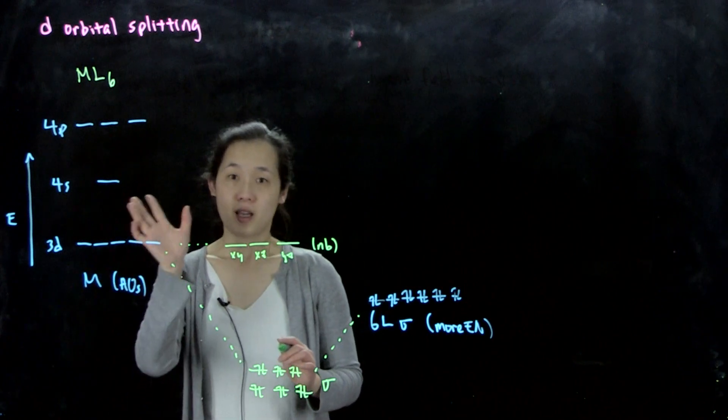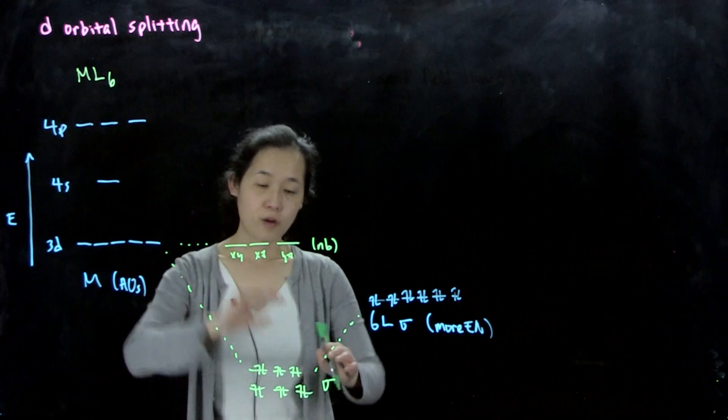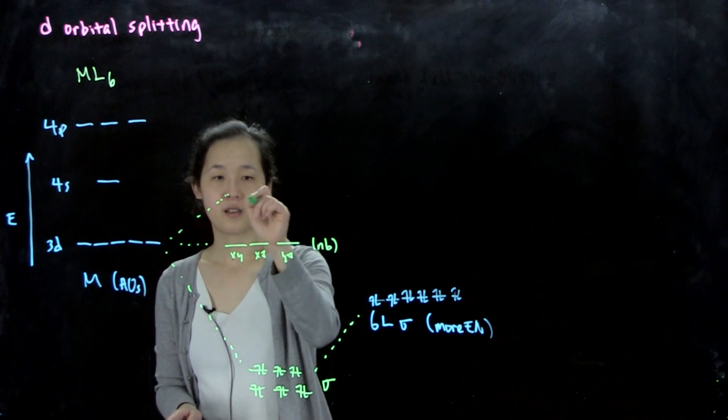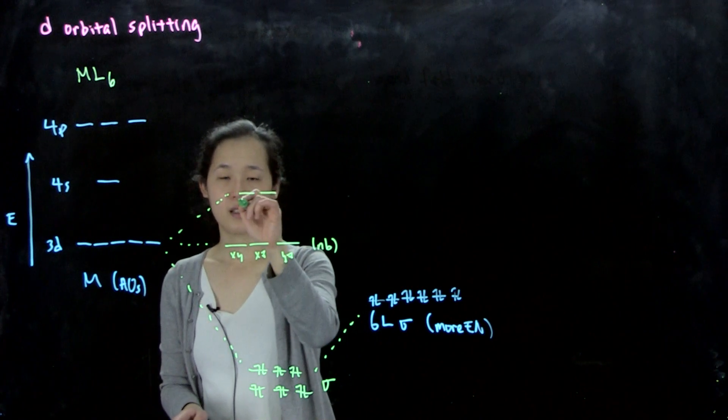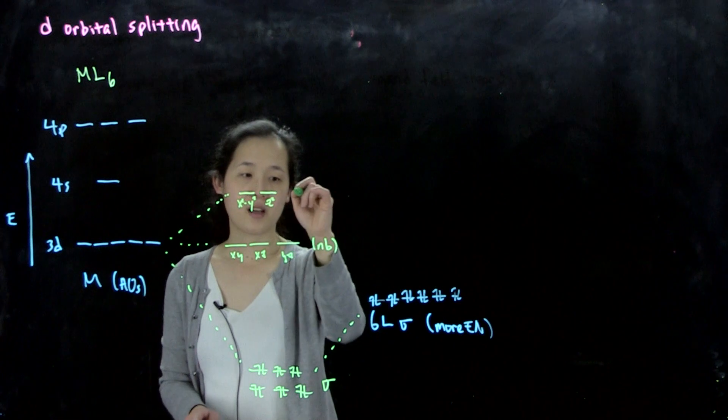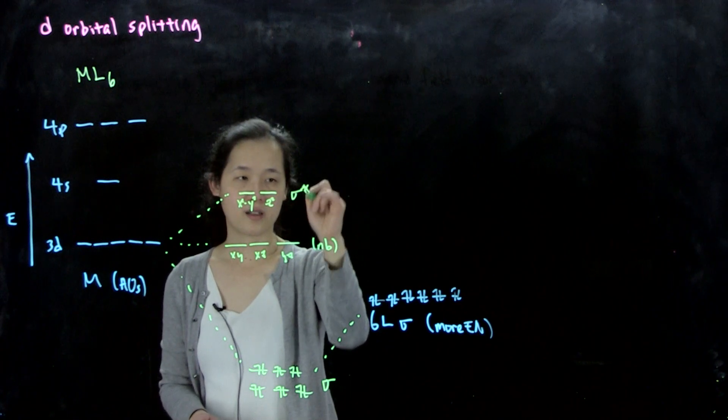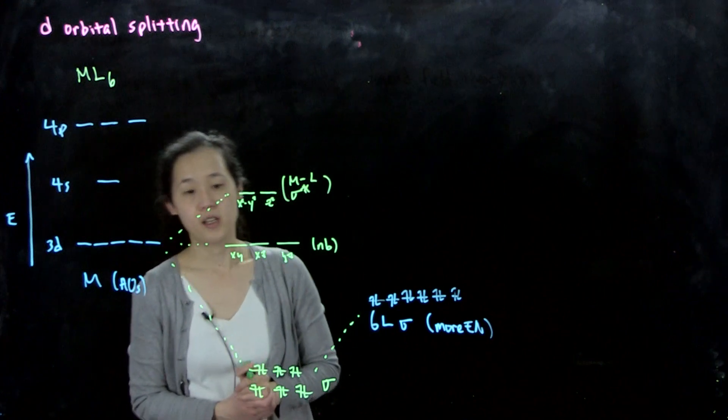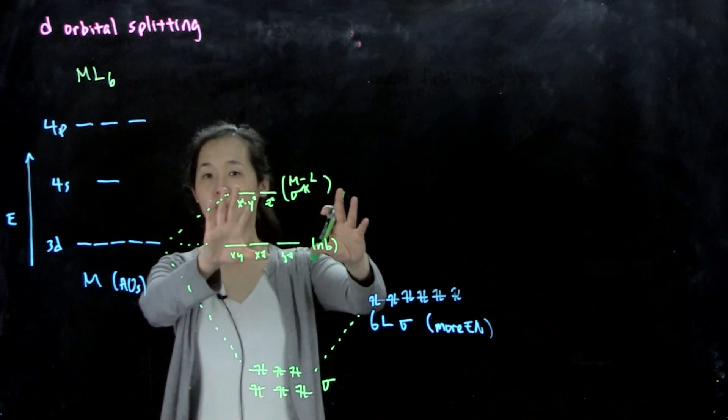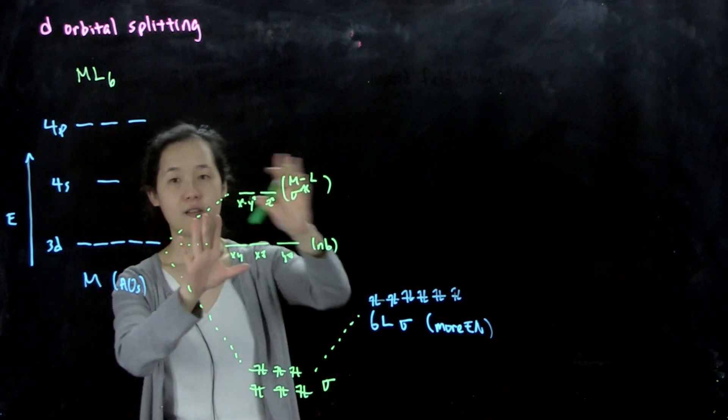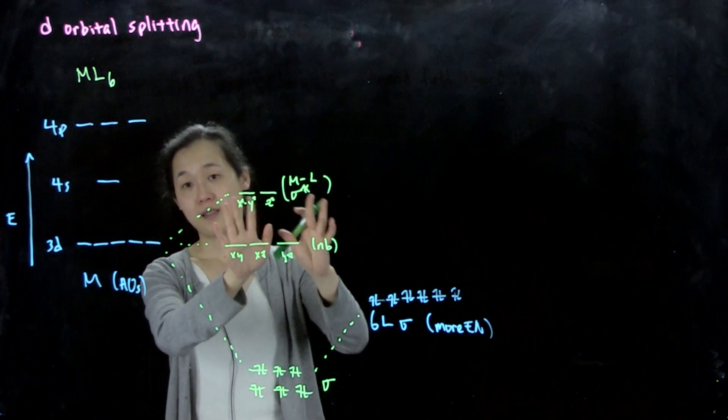But the x squared minus y squared can, so we've already formed our bonding combinations, so we form antibonding d-orbitals. These go up in energy now: x squared minus y squared and dz squared. These become sigma star in character, or ML sigma star. Because these orbitals are all up here, they're closer in energy to the metals. We consider these are basically our metal d-orbitals still.